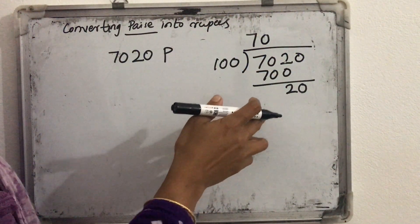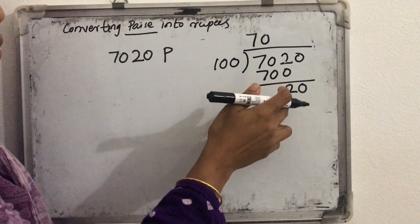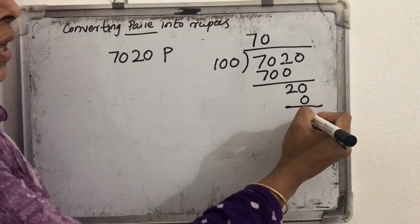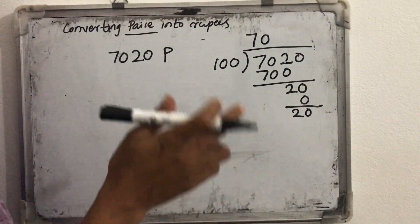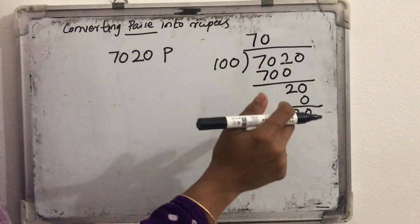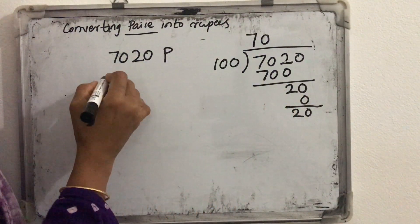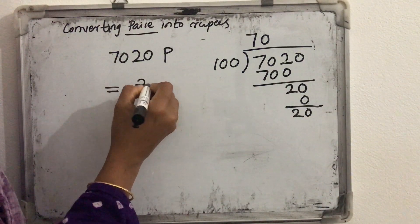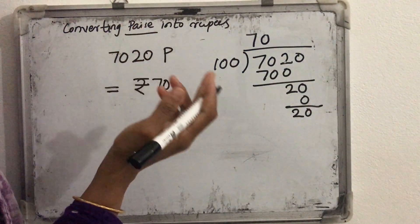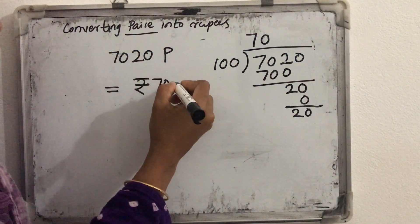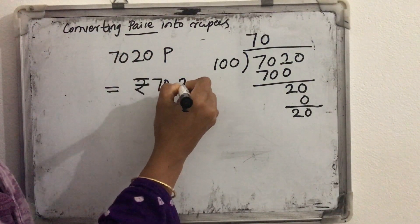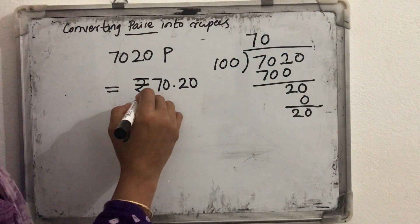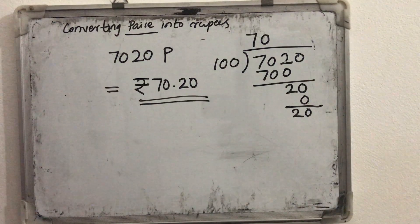Now how much remainder did we get? 0 into 100 we know is 0, then the remainder we will get is 20. So what is the quotient here? 70 and the remainder is 20. So how much rupees and how much paise? This is 70 rupees and 20 paise. That 20 paise we will represent after a decimal point. So this will be 70 rupees and 20 paise.